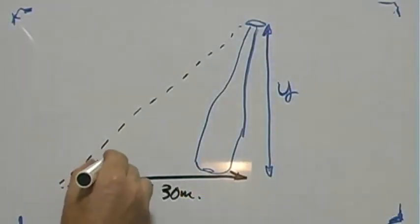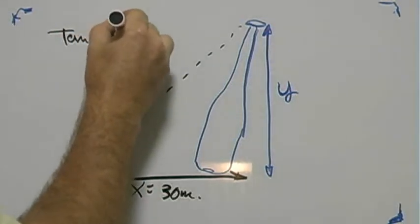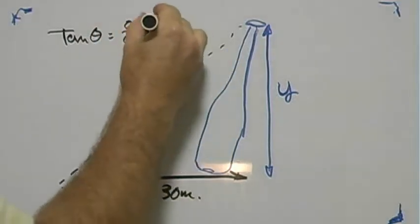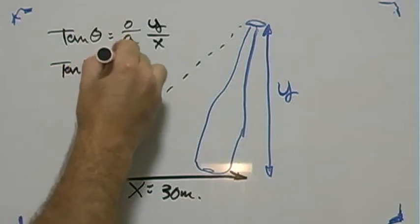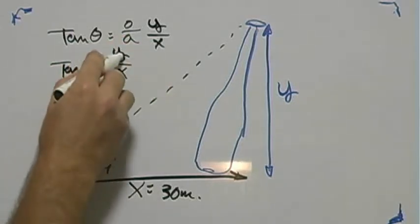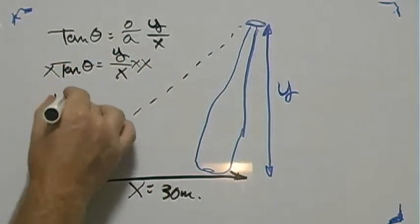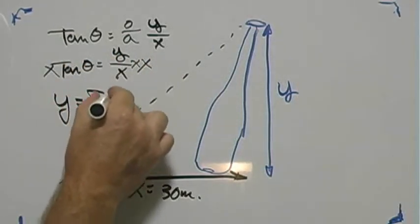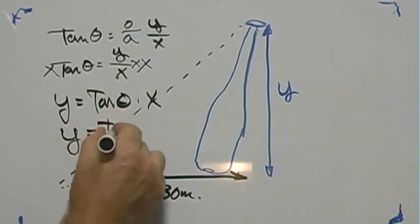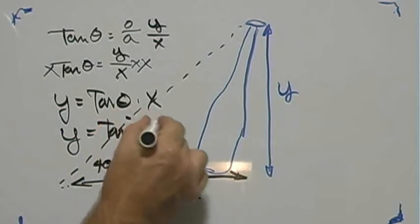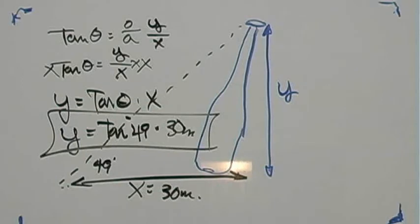We came up with 49 degrees. We know the tangent of the angle is opposite over adjacent, so that's y over x. So the tangent of the angle is equal to y over x. We want to know y, so we multiply both sides of the equation by x. We end up with y being equal to the tangent of the angle times x. So y is equal to the tangent of 49 degrees times 30 meters. You can do that yourself — okay, go do it.